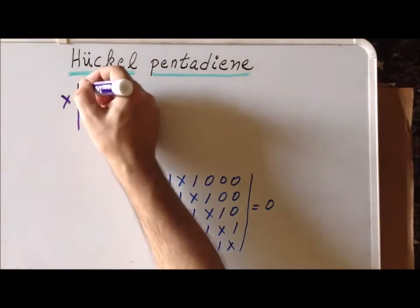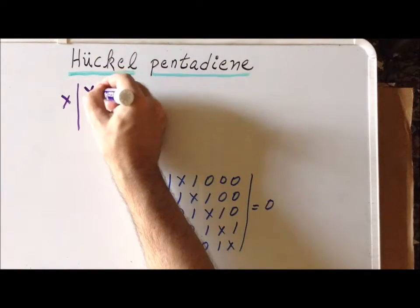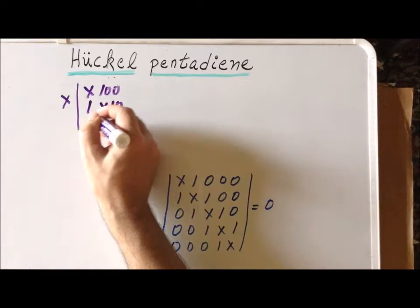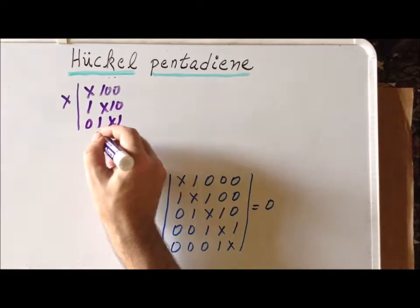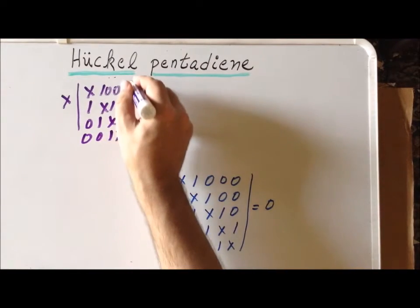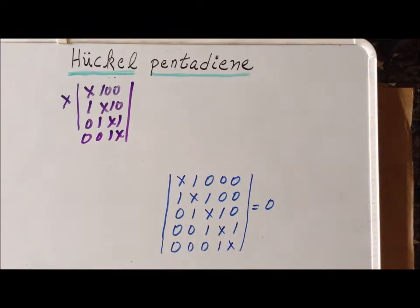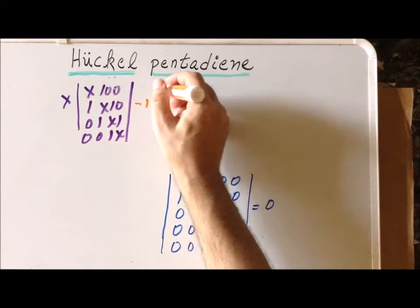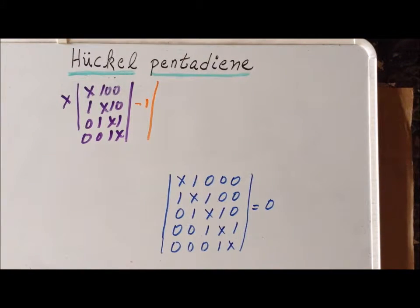The x multiplies the four-by-four determinant formed by removing the first column and the first row, leaving entries: 1, 0, 1, x, 1, 0, 0, 1, x, 1, 0, 0, 1, x. For the second term, we use the second entry in the first column, which is 1, and we alternate signs so the coefficient becomes minus 1. It multiplies the four-by-four determinant formed by removing the first row and the second column.